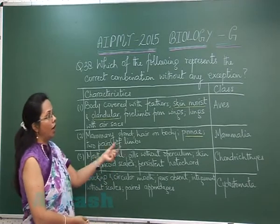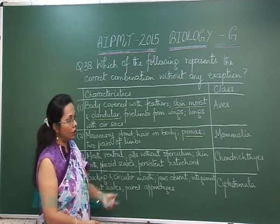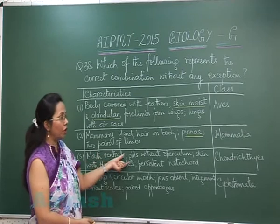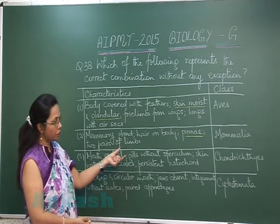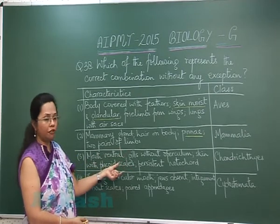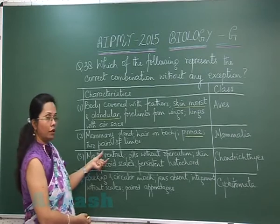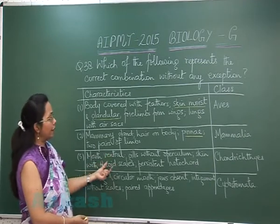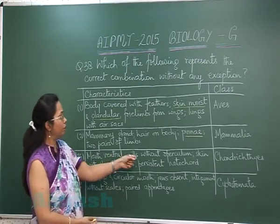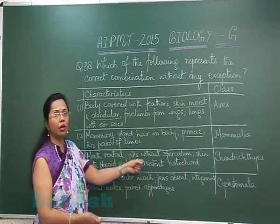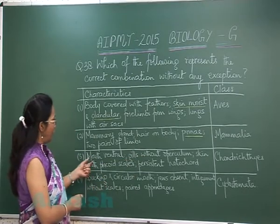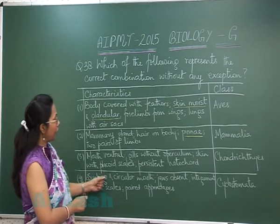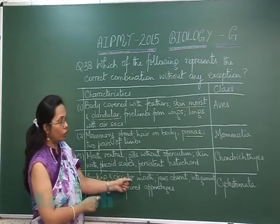The third option lists mouth ventral, gills without operculum, skin with placoid scales, persistent notochord, and Class Chondrichthyes. These are typical characters of cartilaginous fish and are more or less correct. There is one single exception regarding gills without operculum, but it is a minor one.